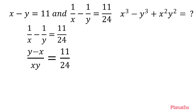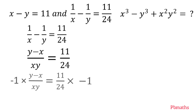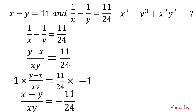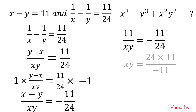It is given that x minus y equals 11, but here in the numerator of LHS we have y minus x. To convert that into x minus y, let's multiply both sides of the equation by minus 1. Then we have x minus y divided by xy equals minus 11 divided by 24. Then xy equals 24 into 11 divided by minus 11, so the value of xy is minus 24.